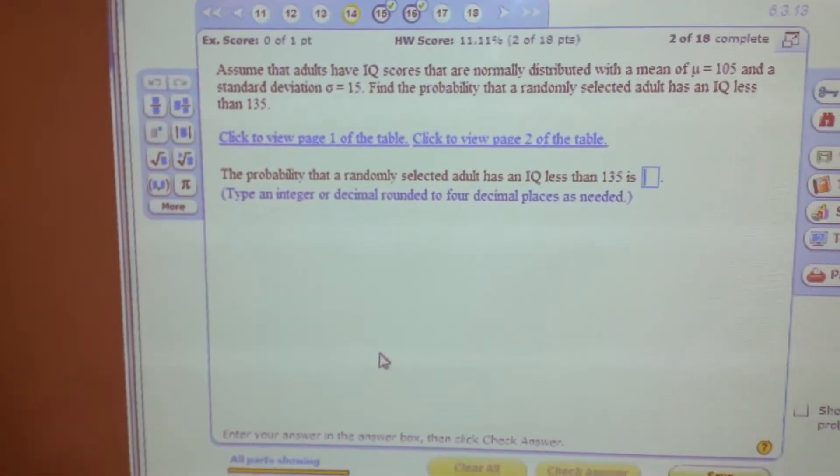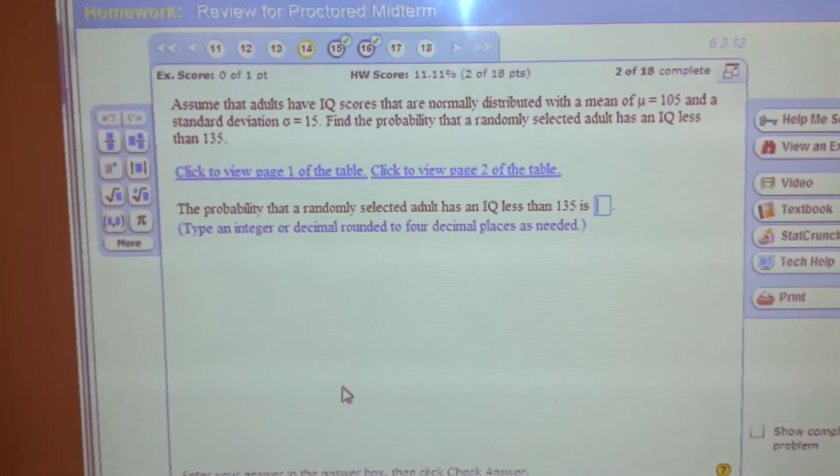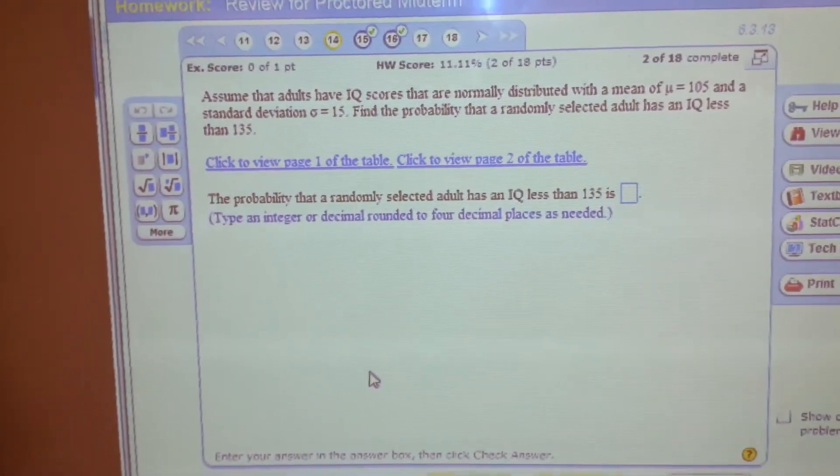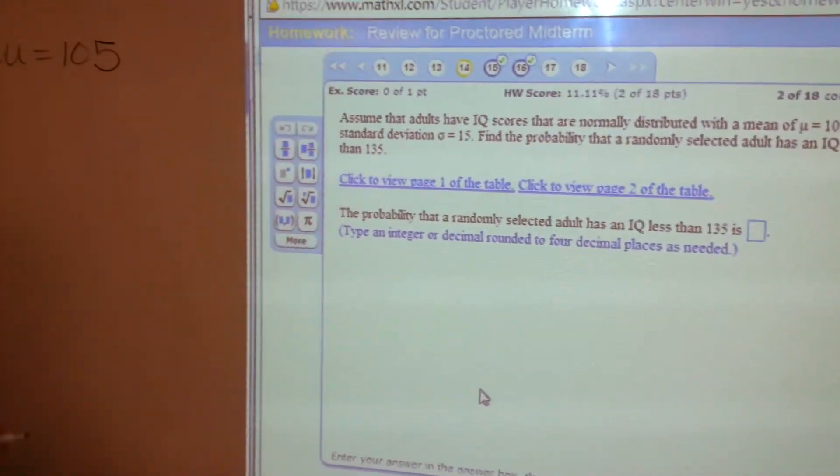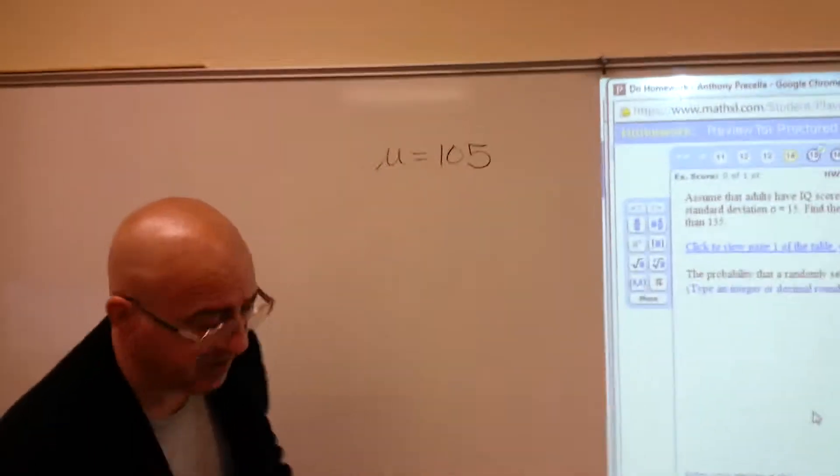So on this problem, adults have IQ scores that are normally distributed with a mean of 105 and a standard deviation of 15.